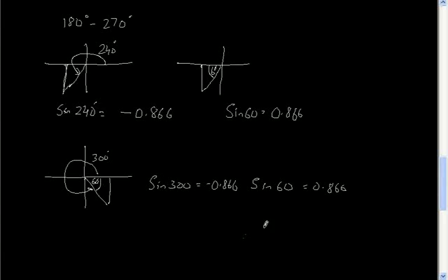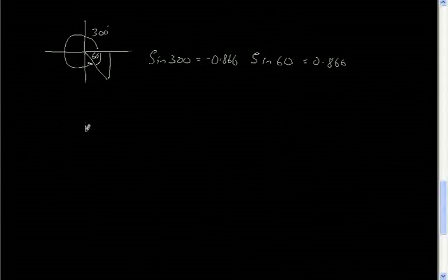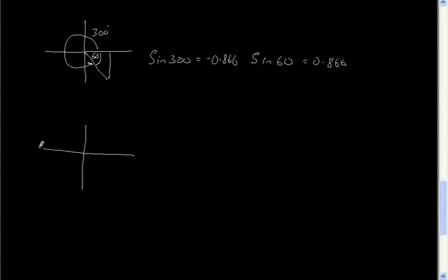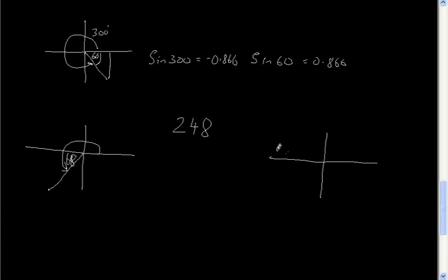It's easy to find the acute angle equivalent for awkward angles. If you're given 248 degrees, the acute angle equivalent would be 248 minus 180, which is 68 degrees. And if you're given 150 degrees, you would draw it past 90 degrees, so the acute equivalent is 180 minus 150, which is 30 degrees.